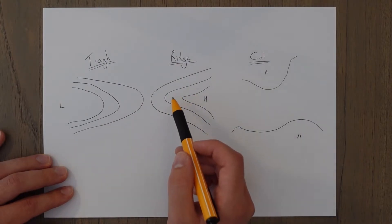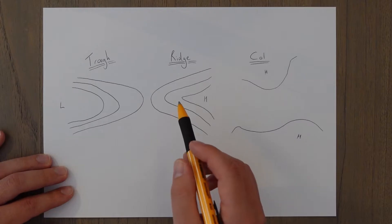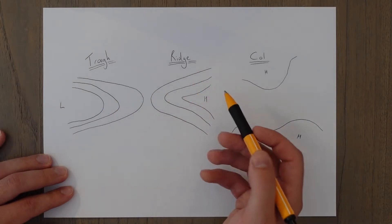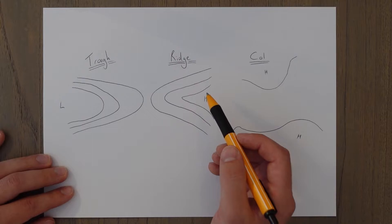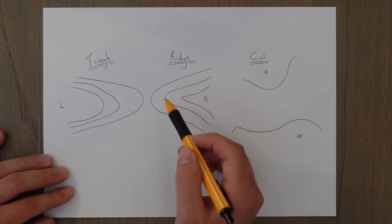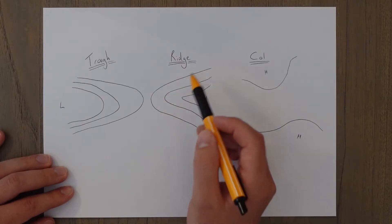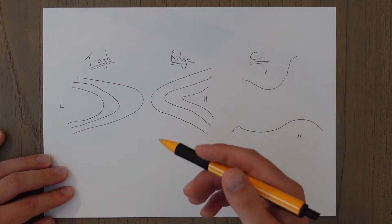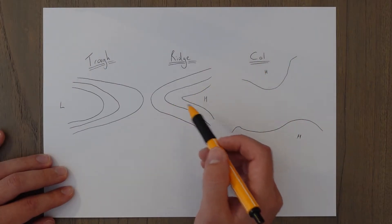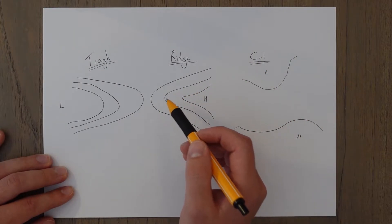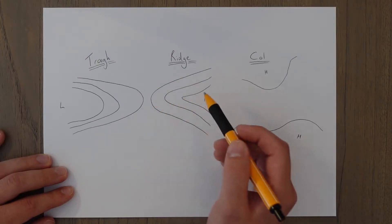A ridge is the opposite, but instead of low pressure, it's high pressure. So you get a sort of valley again, protruding out from an anticyclone and causes similar conditions, clear skies or stratiform clouds along the line.